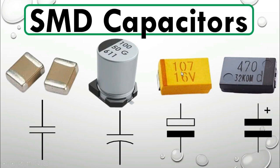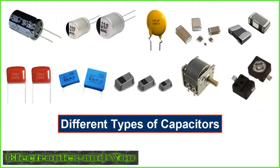Tuning circuits: Capacitors play a crucial role in tuning circuits, especially in radio frequency (RF) and communication systems. Variable capacitors, often in the form of trimmer capacitors or varactors, are used to adjust the resonant frequency of tuned circuits. This tuning capability allows for the selection of specific frequencies and is fundamental in applications such as radio receivers, where different stations need to be tuned. Resonant circuits: Capacitors, when combined with inductors, can form resonant circuits designed to resonate at specific frequencies, enhancing the response to signals at those frequencies. Resonant circuits are employed in various applications, including oscillators, filters, and impedance matching networks.